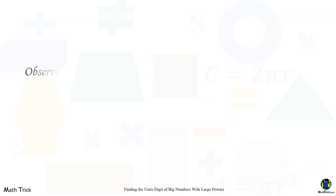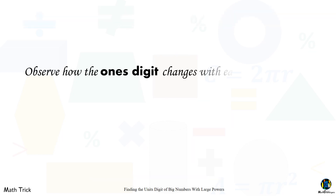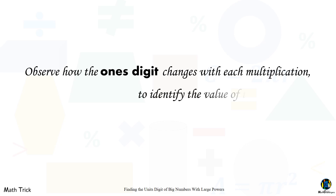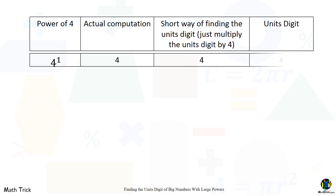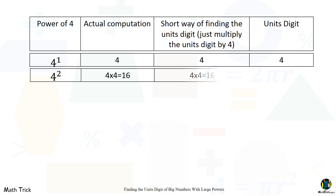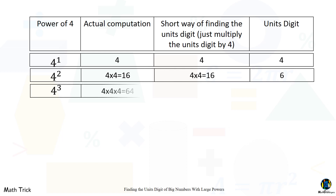The best way is to observe how the one's digit changes with each multiplication. Let's look at the powers of four. Four raised to one is four, so the unit's digit is four. Four raised to the second power is 16, so the unit's digit is six. Four raised to the third power is 64, so the unit's digit is four.